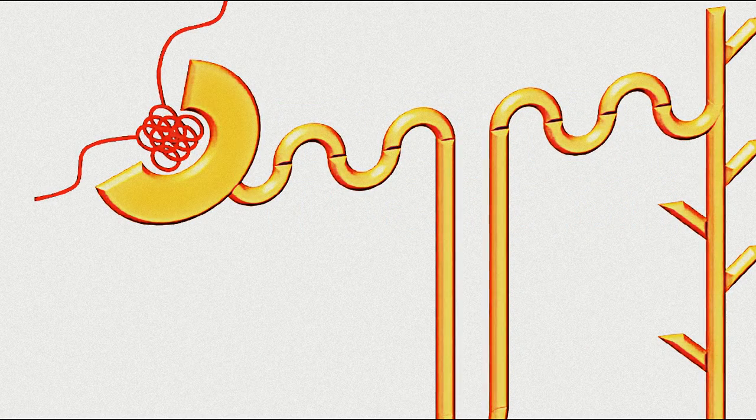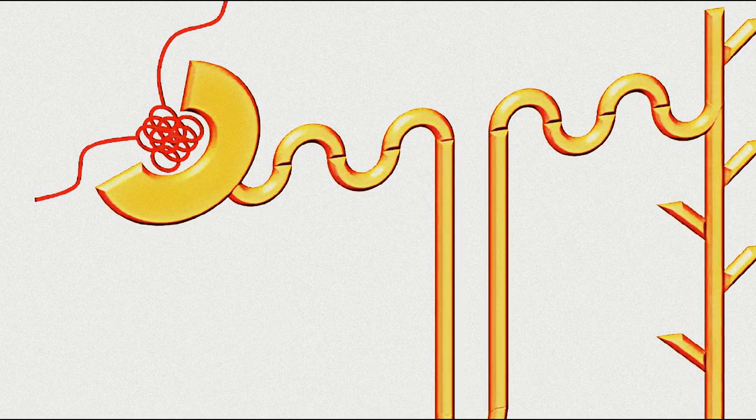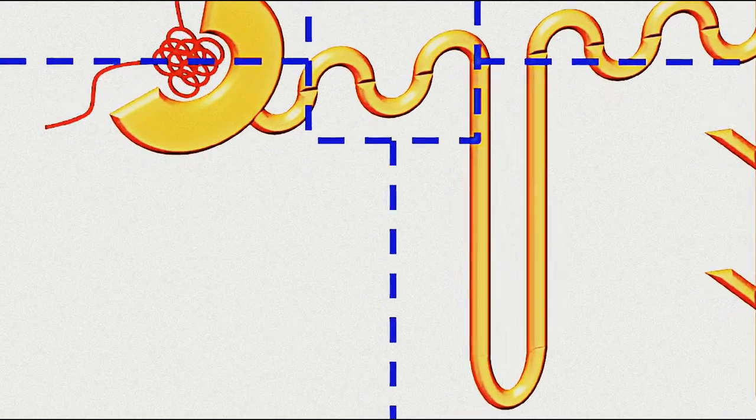Here we have a picture of the nephron and the kidney's role in acid-base balance starts in the proximal convoluted tubule. Let's take a closer look.